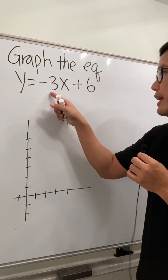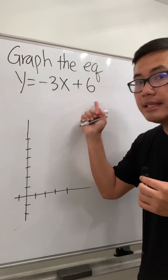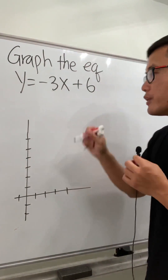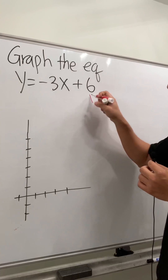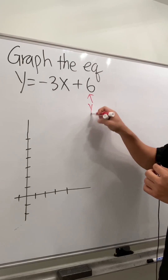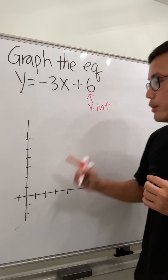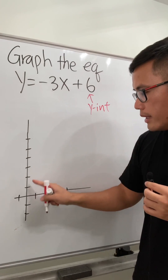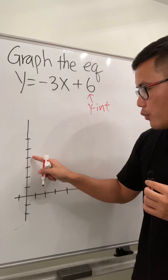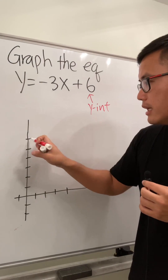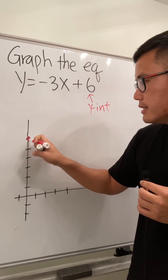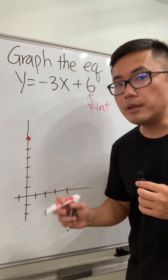We have y is equal to negative 3x plus 6. First, we are going to start with the y-intercept, which is this number right here. That means we are going to go up 1, 2, 3, 4, 5, 6 on the y-axis, and we put a point here.